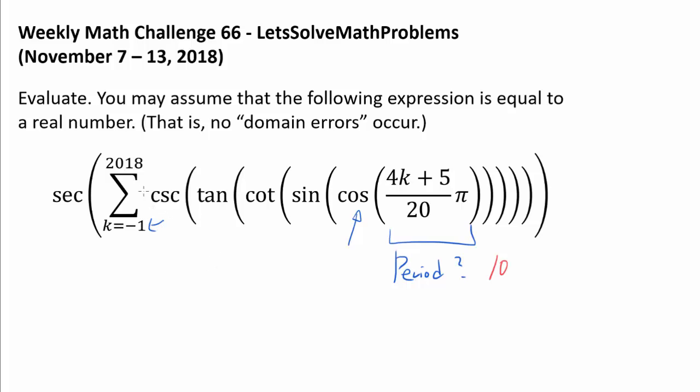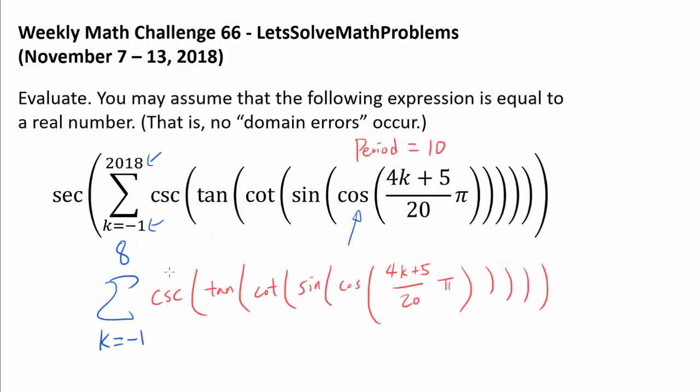And also, let's note that there are 2020 values from k equals negative 1 to 2018, which is actually a multiple of 10. This is telling us that we don't really have to consider the summation from negative 1 all the way to 2018, but only the summation from negative 1 to 8, the first 10 values. And once we can evaluate this from negative 1 to 8, we can multiply by 202, because 10×202 is 2020, to find the value from negative 1 to 2018.